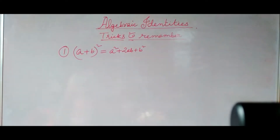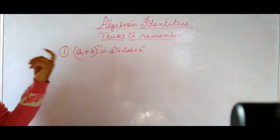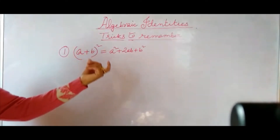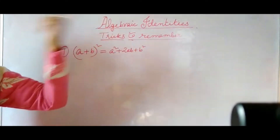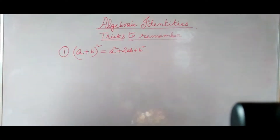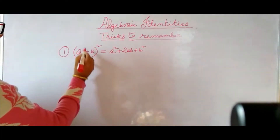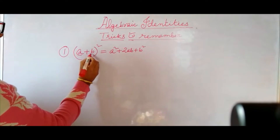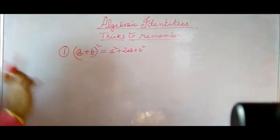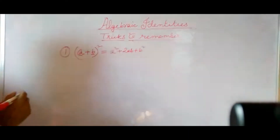So I have written on the board — you can see A plus B whole square. This is the first identity. I think from class 7 you are getting this identity. A plus B whole square is equal to A square plus 2AB plus B square. Let me tell you what we mean by identity: an algebraic identity is an equality which is true for any value of its variables. Here A and B are the variables. That means whatever values of A and B we consider, the left hand side is equal to the right hand side. I will show you with the help of one example.